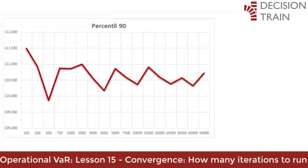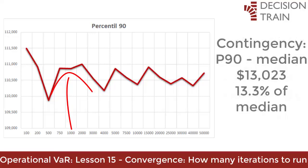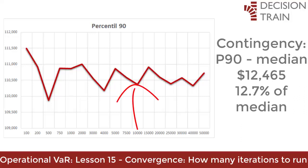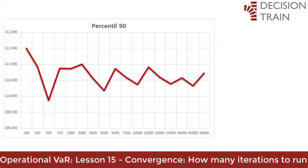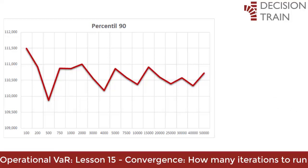If, on the other hand, you're interested in the P90, maybe in 20,000 iterations you still haven't achieved a stable enough percentile. Remember that probabilistic contingencies are generally constructed as the difference between a certain extreme percentile — 90 — denoting the confidence level, minus the mean or median. In this case, if you were to construct a contingency of P90 minus median after 1,000 iterations, you would allocate $13,023, which is 13.3 percent of the median. If you were to assign the contingency after the process has stabilized with 10,000 iterations, the contingency would be more accurate at $12,465, or 12.7 percent of the median. In other words, 10,000 iterations arrive at a more precise number; otherwise, just 1,000 iterations would have underestimated the contingency by almost 5 percent. It seems that the process requires at least 5,000 iterations to stabilize.